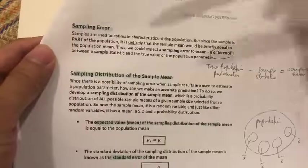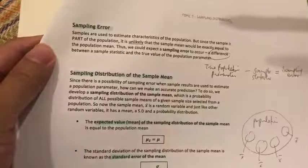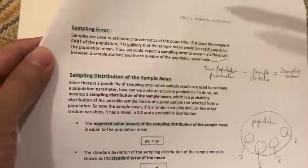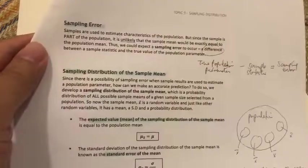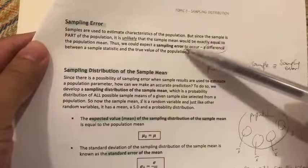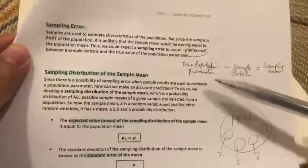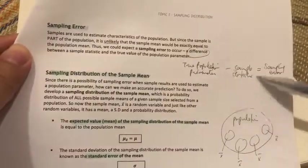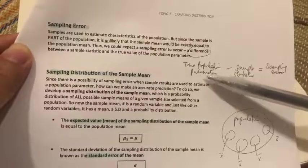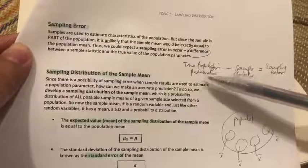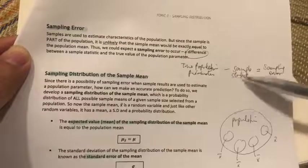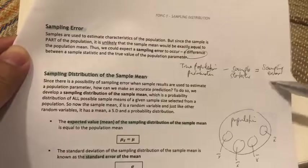Logically, since a sample is only a part of the population, it is very unlikely that the sample mean we collect would be exactly equal to the population mean, which is our main intention. Since the sample mean is not equal to the population mean, there exists a sampling error. Basically, sampling error is the difference between the sample statistic collected from our sample and the true value of the population mean that we could have gotten if we asked the entire population.